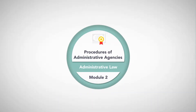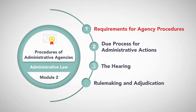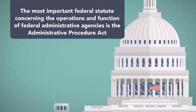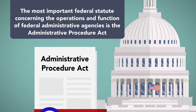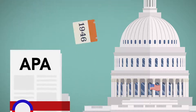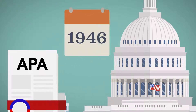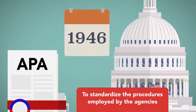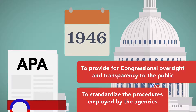Module 2: Procedures of Administrative Agencies. The most important federal statute concerning the operations and function of federal administrative agencies is the Administrative Procedure Act, or the APA. It was passed in 1946 at the time of great expansion of federal agencies to standardize the procedures employed by the agencies, and to provide for congressional oversight and transparency to the public.